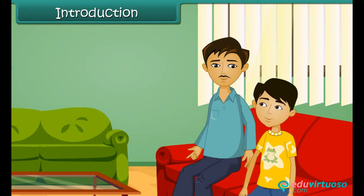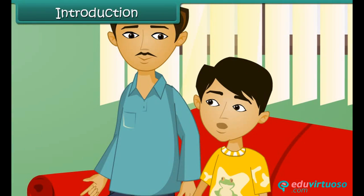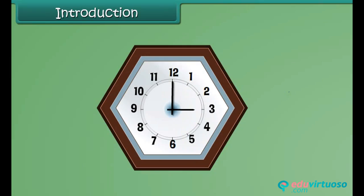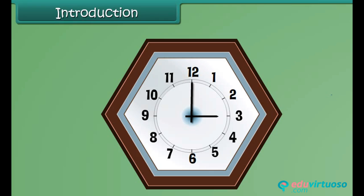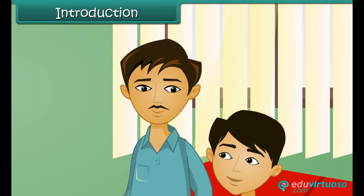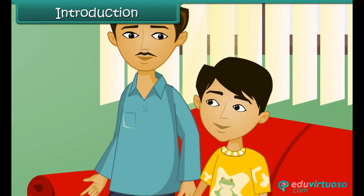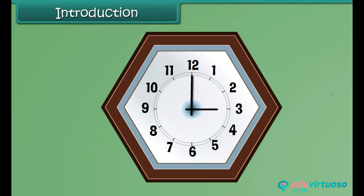Why are you looking at the clock, Vijay? I am trying to make out the angle made by the hands of the clock, uncle. I see. So what angle do they make, Vijay? They make a right angle, uncle. Great! Can you also comment on the shape of the clock, Vijay? Sure! The clock has six sides and it's a hexagon.